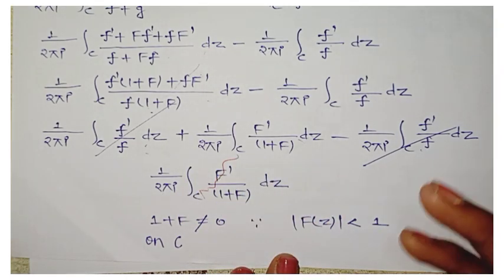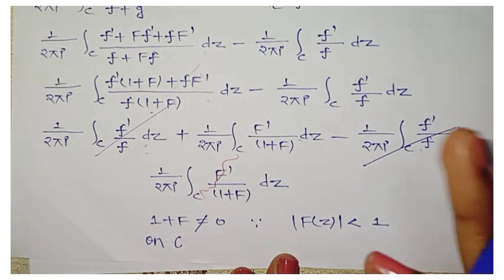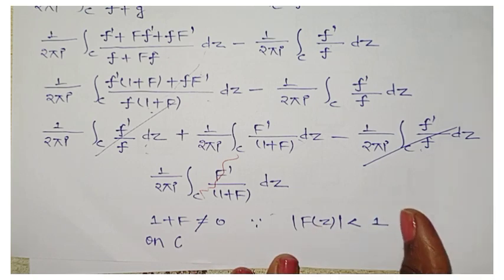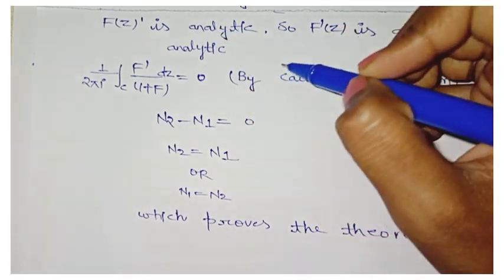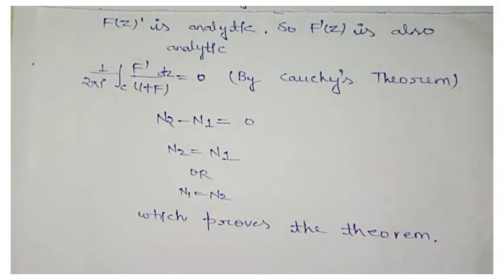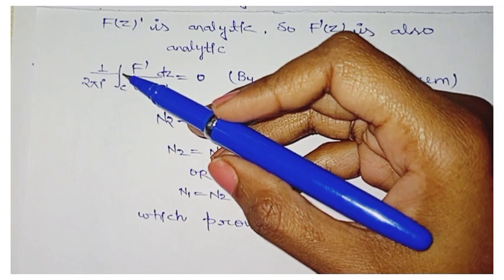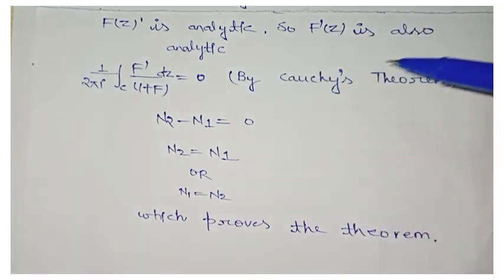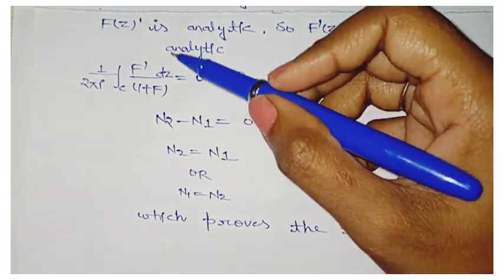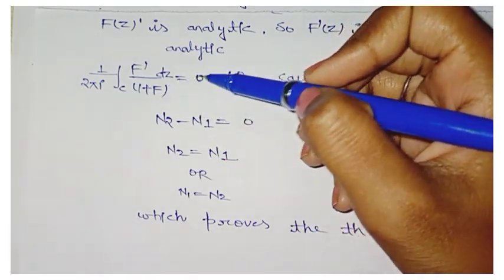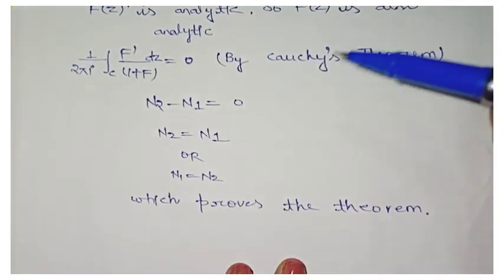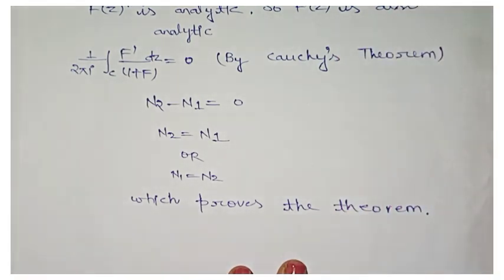We already know from the start that mod of F(z) < 1 on C. So F(z) is analytic, and therefore F'(z) is also analytic — if a function is analytic, its derivative is also analytic. So (1/2πi) ∮ F'/(1+F) dz = 0 by Cauchy's theorem. Therefore n2 - n1 = 0, which gives us n2 = n1, i.e., n1 = n2.